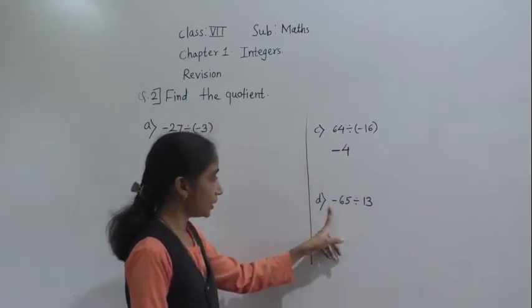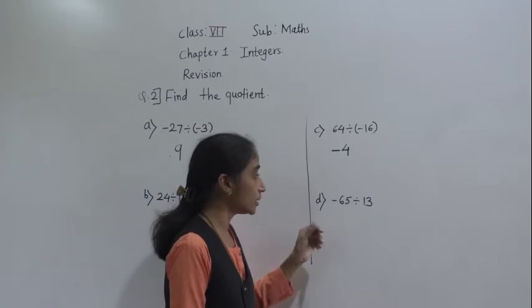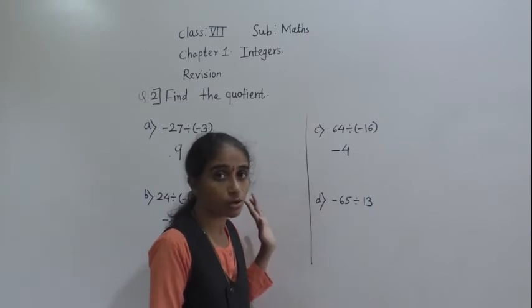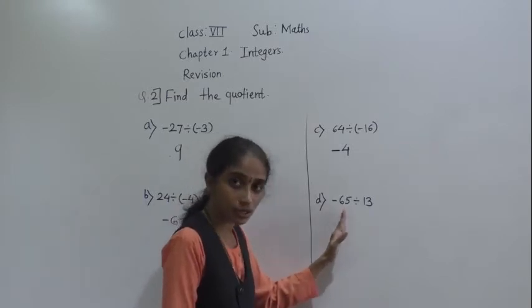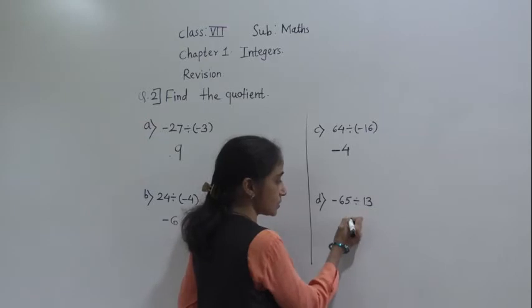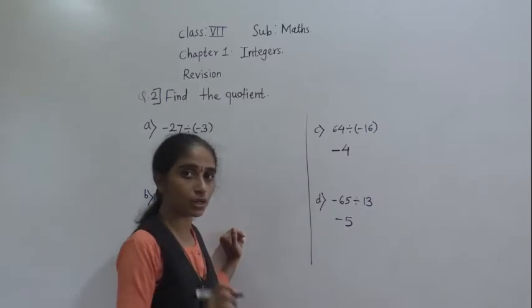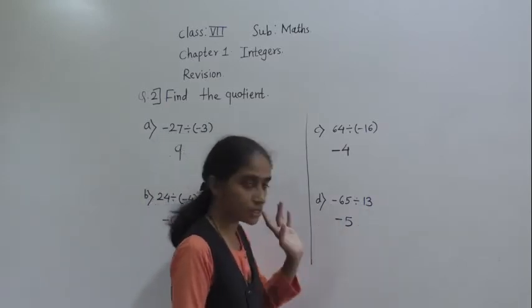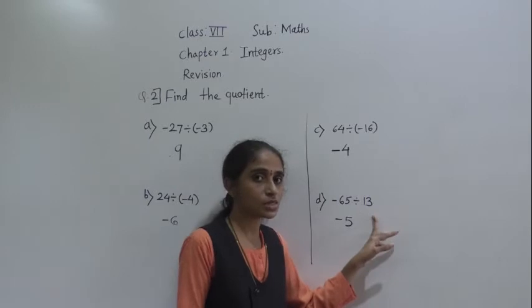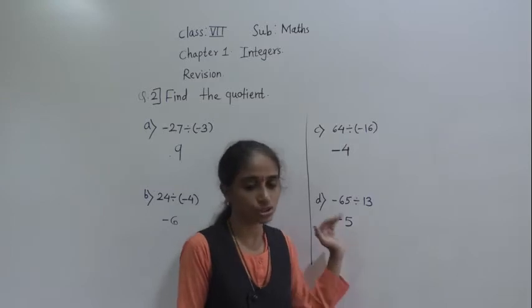Next example: minus 65 divided by 30. When we divide a negative integer by a positive integer, we divide them as a whole number. So 13 fives are 65 — and put a minus sign before the answer. This number is negative, this number is positive, so the quotient is negative. When we divide a negative integer by a positive integer, we divide as a whole number and then put minus sign before the answer.